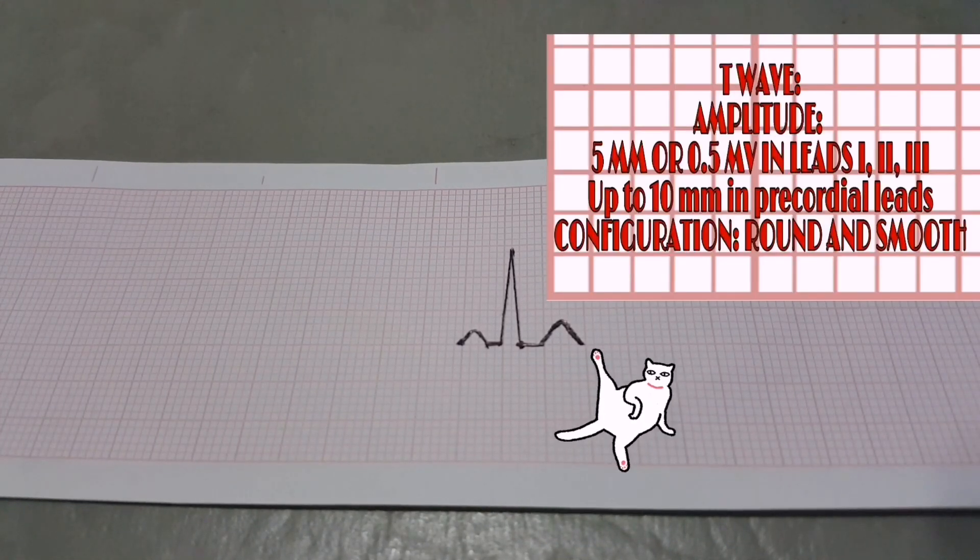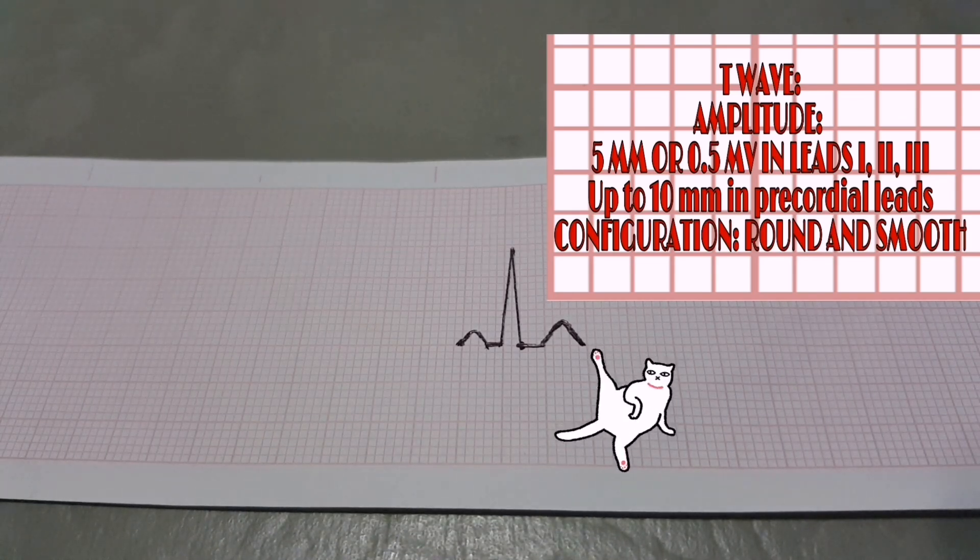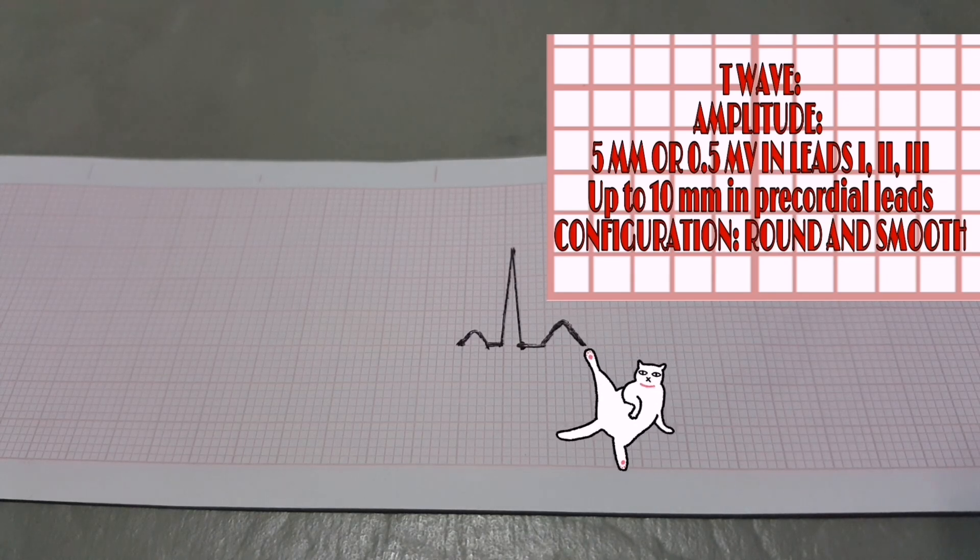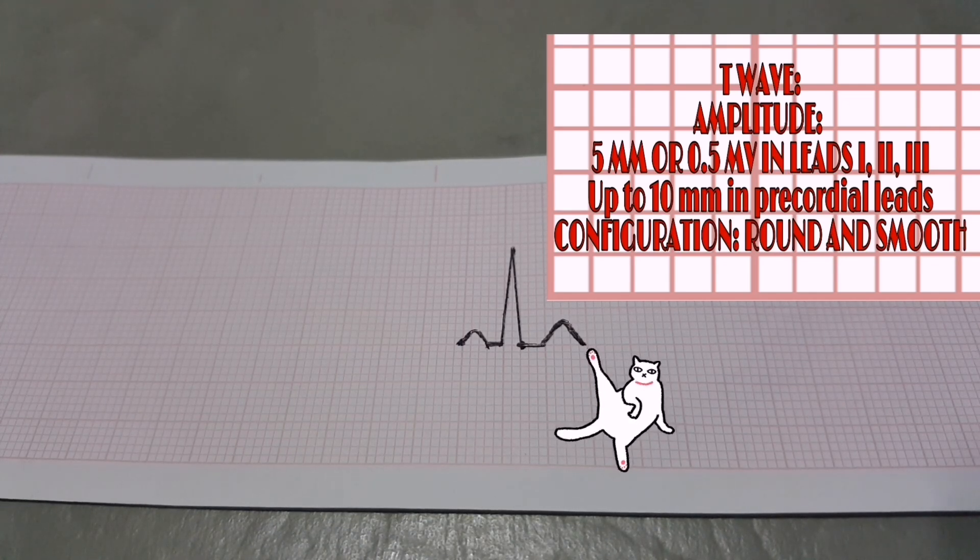The T-wave represents ventricular repolarization. It occurs after the S-wave. Amplitude, 5 millimeters or 0.5 millivolts in leads 1, 2, and 3, and up to 10 millimeters in precordial leads.